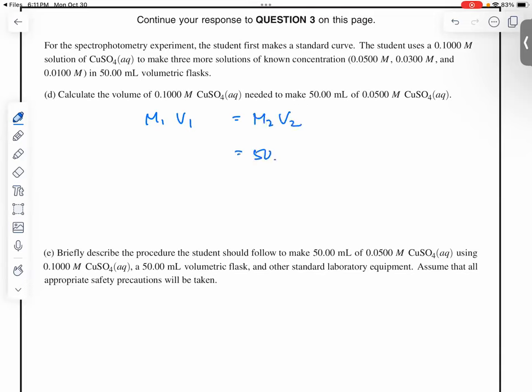So 50 milliliters, 0.0500 molar, and then 0.1 molar to V1. So that will be a point... oh, that's not a point. What is it? 500, sorry, no, no, 50 times 0.5. So 25.0 milliliters. Yeah.